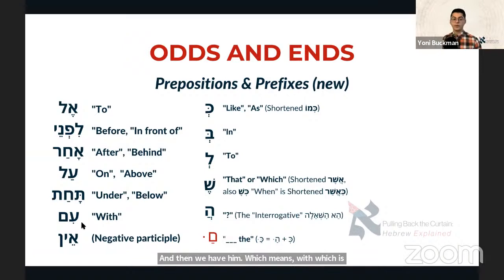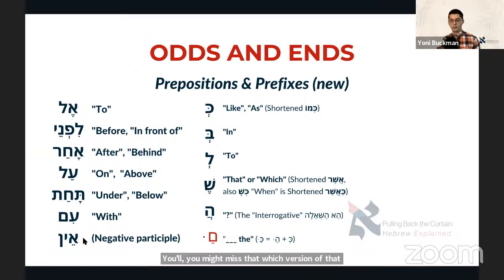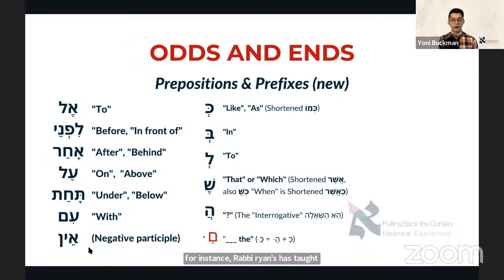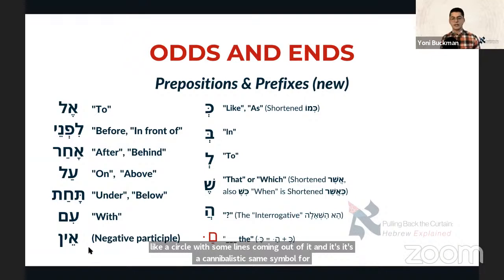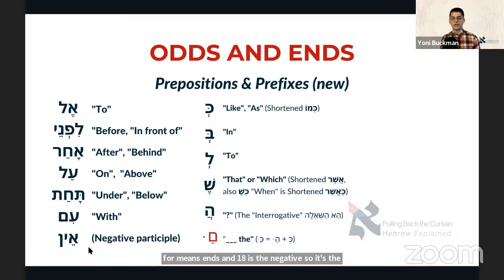And then you have 'im' meaning 'with,' which is different from 'im' with an aleph. If the ayin and aleph sound the same, you might miss which version of the word is being said — a point Maimonides was very strict about. 'Ain' can mean 'not' or 'no' — it's really just a negative. Sometimes it's not even translated directly. For instance, Rabbi Rines has talked about how on the tapestry covering the ark in our sanctuary, there's a Kabbalistic symbol called the 'ain-sof' — the infinite. 'Sof' means 'end' and 'ain' is the negative, so it means 'without end' — God as the ain-sof, as the infinite.